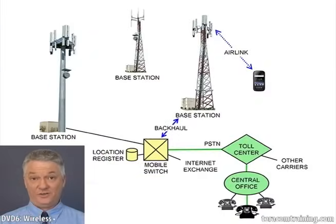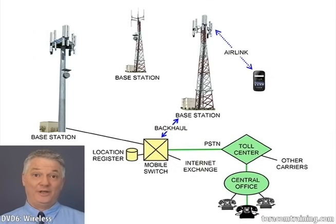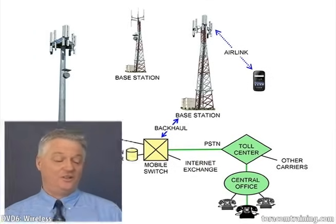To get started in the second part of the course, we'll go through the main components of a mobile network. Starting with the handset, terminal, cell phone, or smartphone: it has a speaker and a microphone, a codec for digitizing speech, a modem for moving ones and zeros around, an antenna and battery, and of course a keypad and a screen.